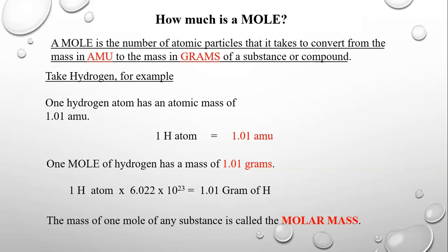So one hydrogen atom times 6.022 times 10 to the 23rd equals 1.01 grams of hydrogen. The mass of one mole of any substance is called the molar mass. 6.022 times 10 to the 23rd is the only number that will make that conversion from a certain number of atomic mass units — 1.01 in the case of hydrogen — to that exact same number of grams. If you had picked 1 times 10 to the 20th, it would have converted 1.01 amu to some weird number of grams. Only 6.022 times 10 to the 23rd makes the numbers come out exactly the same.